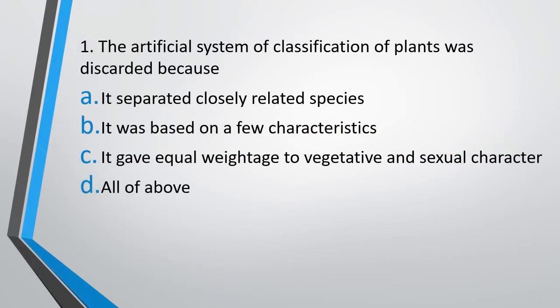Question 1: The artificial system of classification of plants was discarded because — Option A: It separated closely related species. Option B: It was based on fewer characteristics. Option C: It gave equal weightage to vegetative and sexual characters. Option D: All of the above.